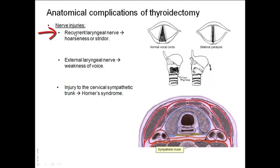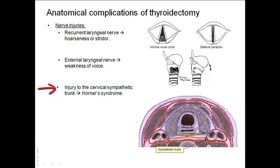Nerve injuries include injury of the recurrent laryngeal nerve, which can result in hoarseness or stridor. Injury of the external laryngeal nerve results in weakness of voice and a low-pitched sound. Injury of the cervical sympathetic trunk can result in Horner's syndrome.